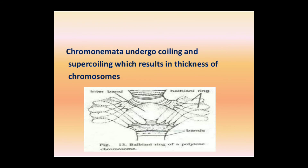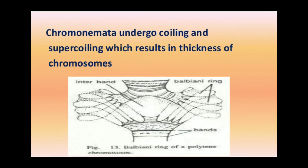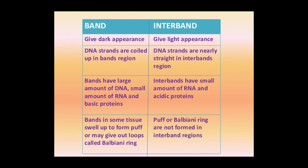Chromonema undergoes coiling and super-coiling, which results in the thickness of the chromosome. Due to the coiling and super-coiling of chromonema, very thick chromosomes are formed. Here is the Balbiani ring of polytene chromosomes.